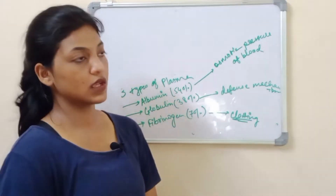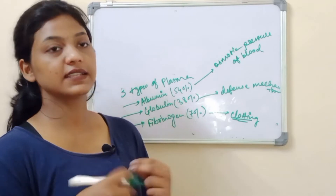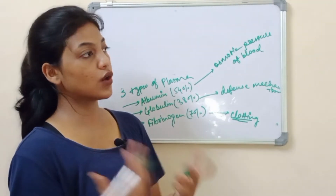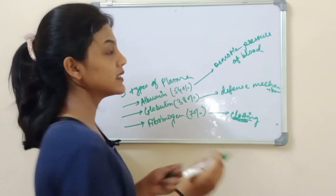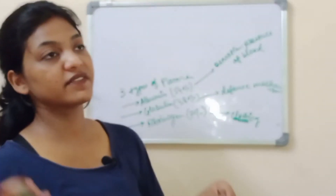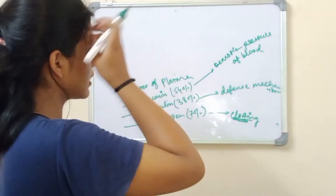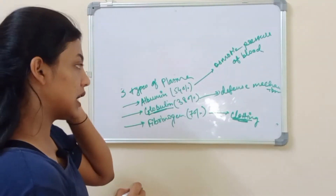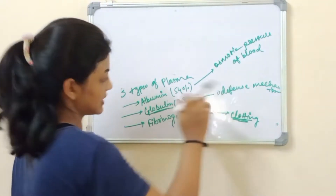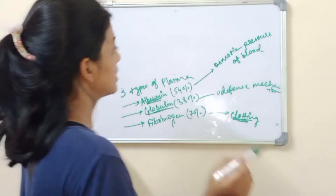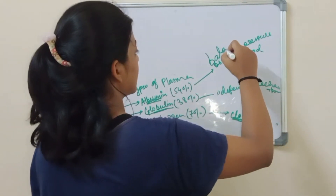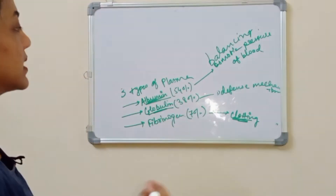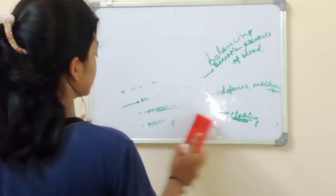Albumin maintains the osmotic pressure of blood. Globulin has a function in defense mechanism. Fibrinogen has a role in blood clotting — it is the mechanism to prevent blood loss from the body. Albumin is the most important and most abundant type of plasma protein. All plasma proteins are synthesized by the liver.